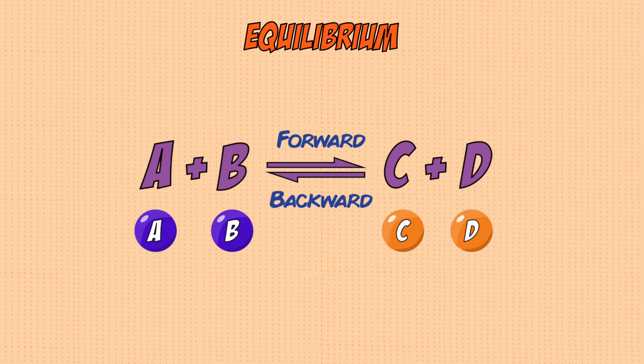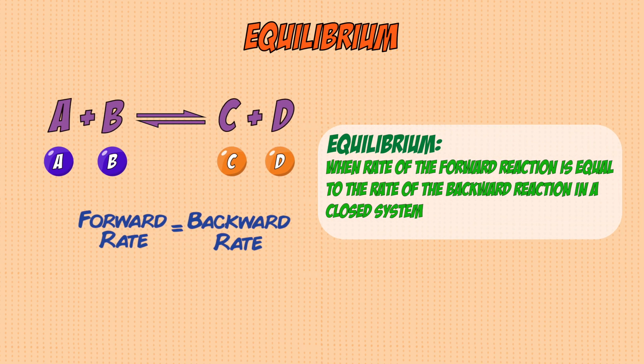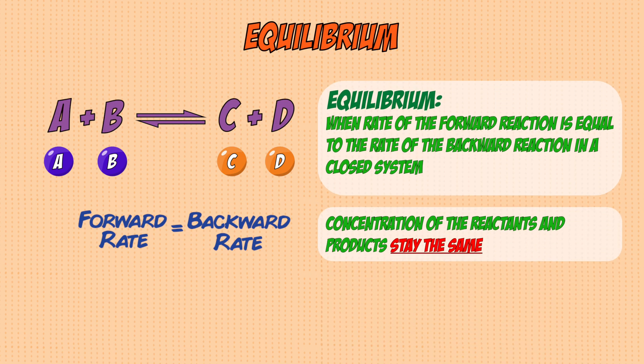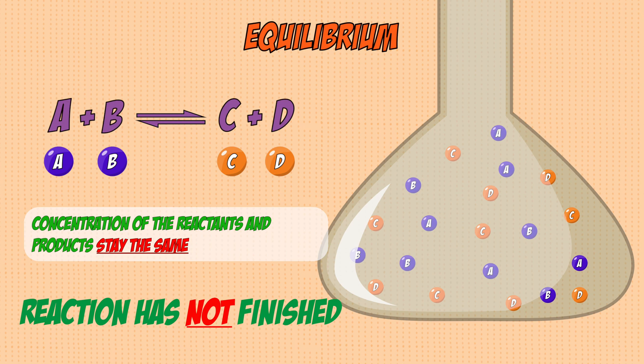As soon as products are formed, they react with each other to reform the reactants. You have two reactions happening simultaneously: the forward and backward reaction. They reach a point where both reactions happen at the same speed — this is equilibrium, defined as when the rate of the forward reaction equals the rate of the backward reaction in a closed system. The concentrations of reactants and products stop changing, but the reactions are always still happening.